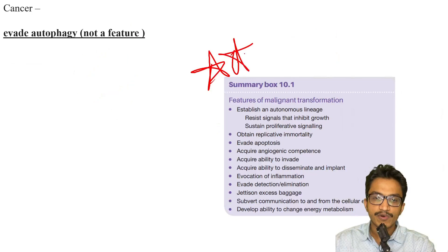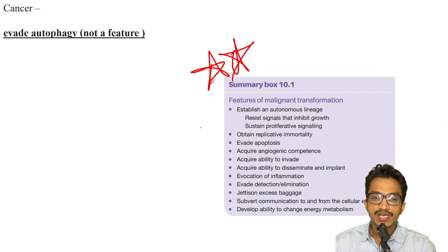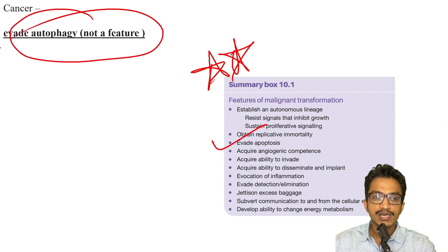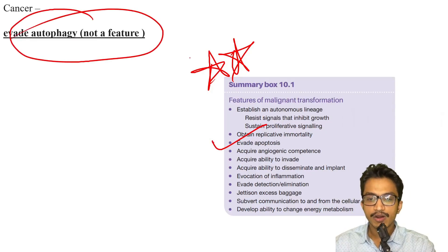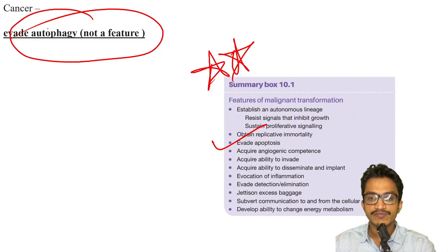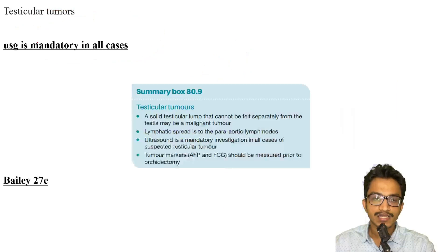From my must-know videos: the answer is that malignant transformation evades apoptosis — not autophagy. All other options are logical, but if 'evades autophagy' is given as an option, it is the wrong answer and not a feature of malignant transformation.